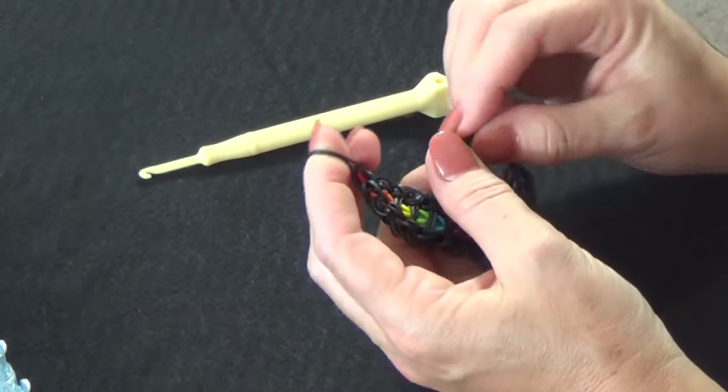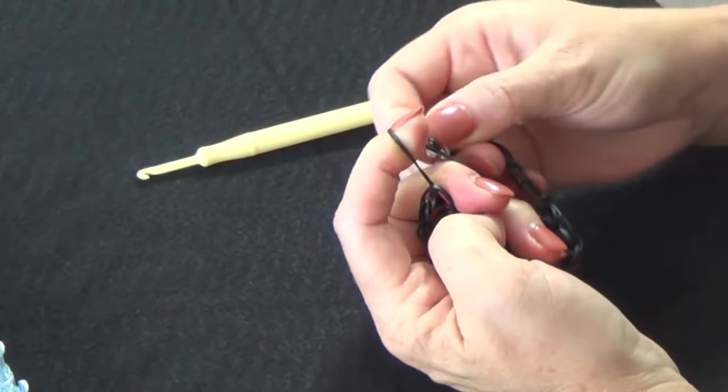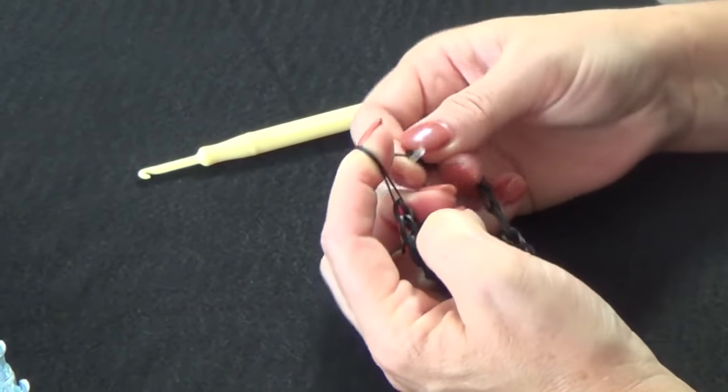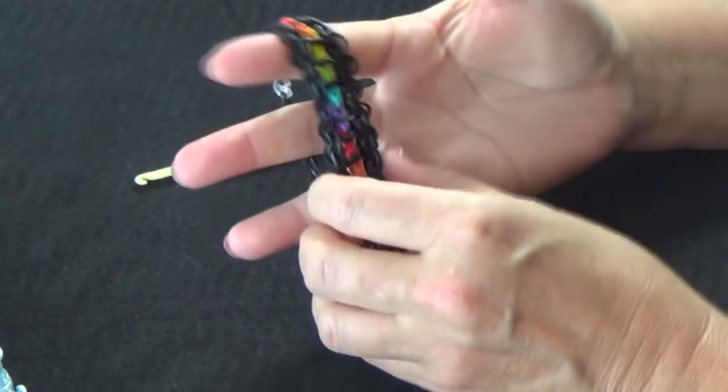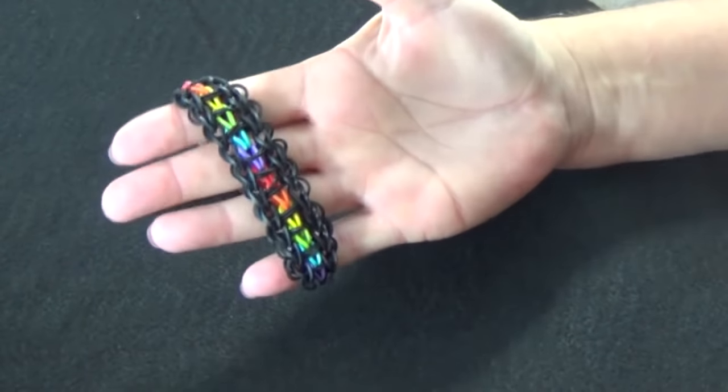You'll get your C clip. And you'll just snap that over the bands. And there you have your finished bracelet.